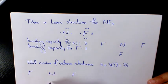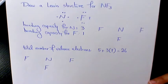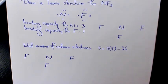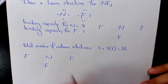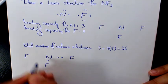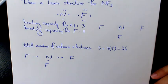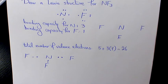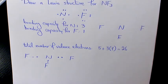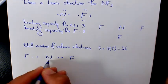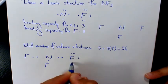Now I place NF₃ like that and place a pair of electrons between each adjacent pair of atoms — two here, two here, two here. Then the next step is to place pairs of the remaining valence electrons as lone pairs on the surrounding atoms, not the central atom, following the octet rule for each fluorine atom.